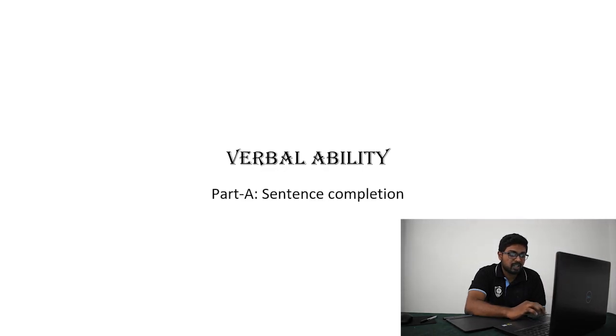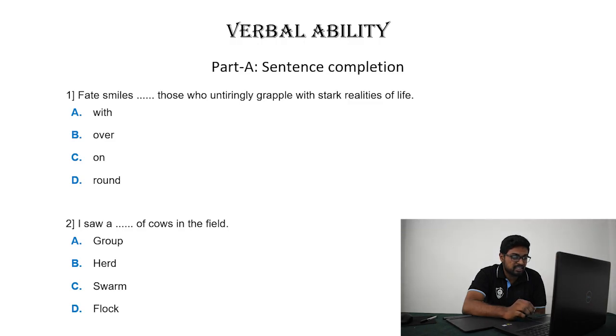First is sentence completion. Basically, they will give you four to five choices and you have to choose the best fit for that particular sentence. The first one is: fate smiles dash those who untiringly grapple with stark realities of life. The meaning of grapple is struggling or striving or staying strong no matter what. It means you're facing the difficulties, harsh difficulties in life and staying strong.